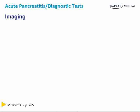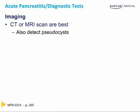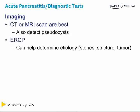Imaging is the most specific diagnostic test. CT or MRI scan are best because they also detect pseudocysts. Pseudocysts develop four to six weeks after a bout of acute pancreatitis. ERCP can help to determine the etiology such as stones, a stricture, or even a tumor. But don't forget, ERCP is also a cause of acute pancreatitis.